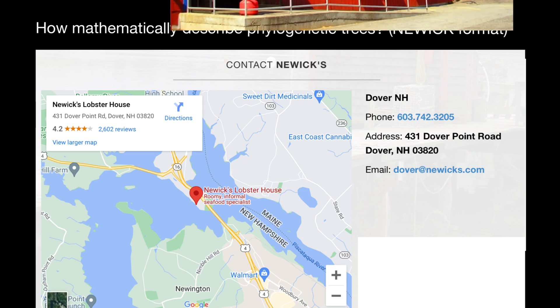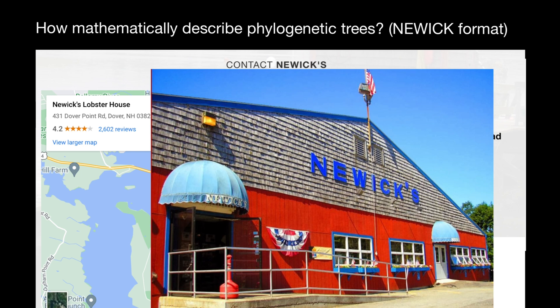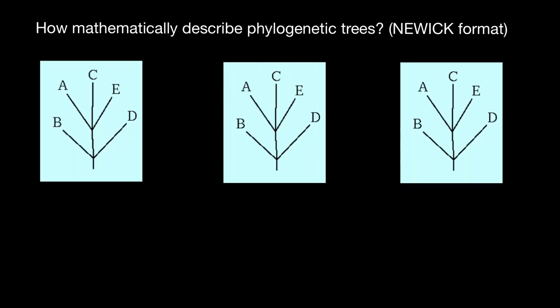They decided to adopt this description format to describe phylogenetic trees, and they called it Newick. So Newick stands for the name of the restaurant where they met, and not like an abbreviation where each letter stands for something. Now let's return to our phylogenetic trees and let's learn how to use this method.